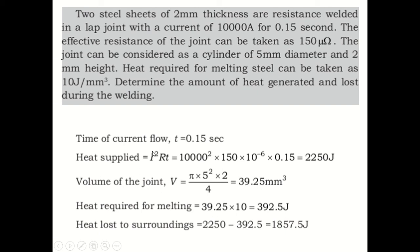From this equation, you can calculate the heat supplied: I²Rt. I² is 10,000². I'm extremely sorry, I made a mistake - this 150 micro-ohm is converted into ohms by 150 × 10⁻⁶, and 0.15 is the time. So you will get H = I²Rt, and the heat supplied is 2250 joules.